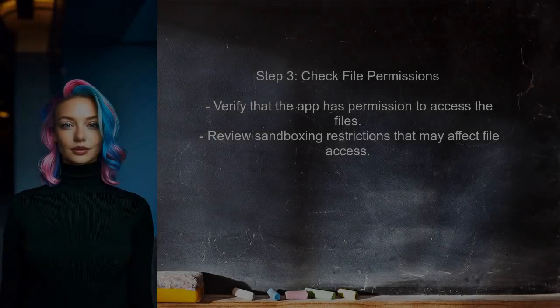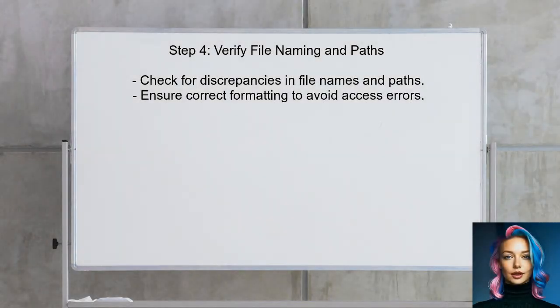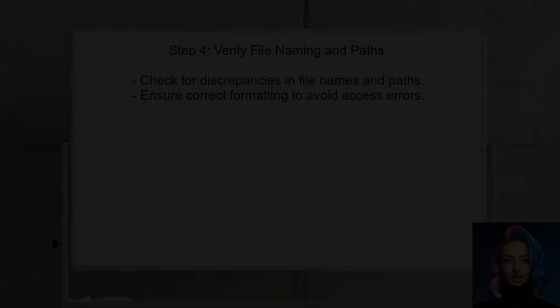If the files are present, the user should check the permissions for accessing these files. Sometimes the app may lose access to files due to sandboxing restrictions. Additionally, the user should ensure that the file names and paths are correctly formatted. Any discrepancies in naming or path structure can lead to the error message stating that the file could not be opened.